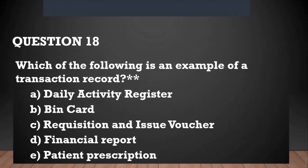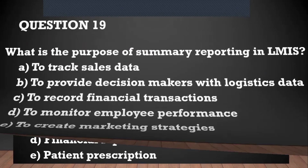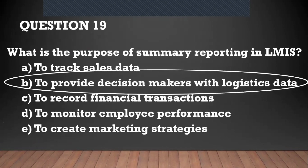Question number eighteen: which of the following is an example of a transaction record? When things move between facilities, whether up to down or down to up, there is a transaction record. The answer is the requisition and issue voucher. Question number nineteen: what is the purpose of summary reporting in LMIS?